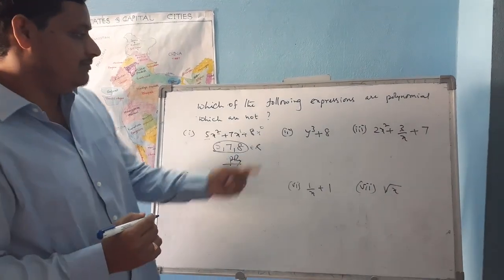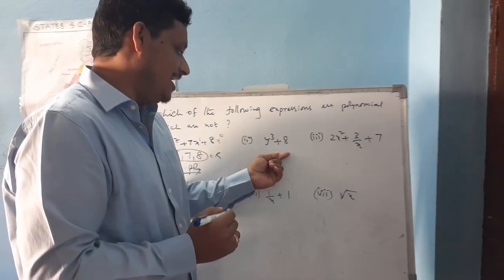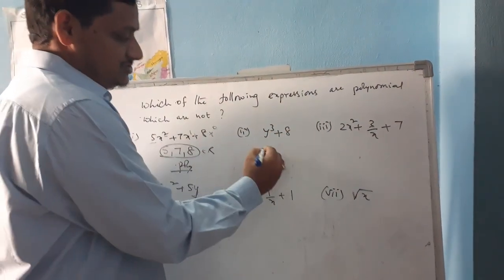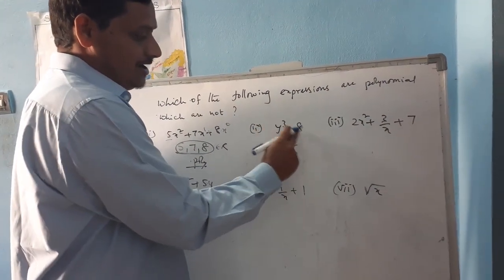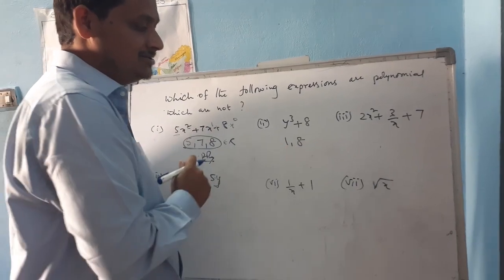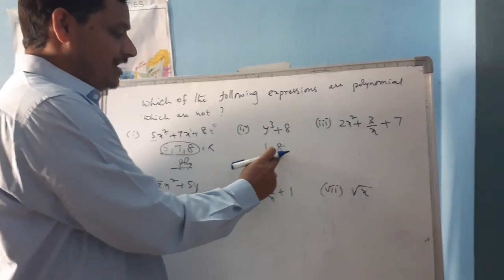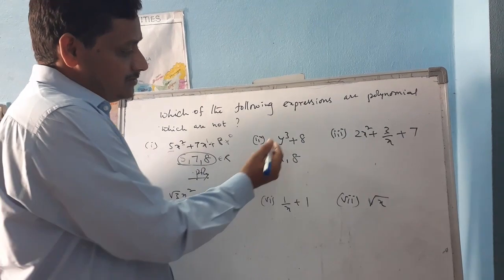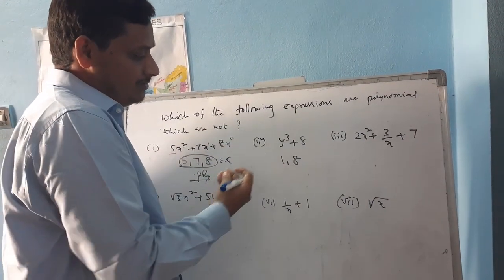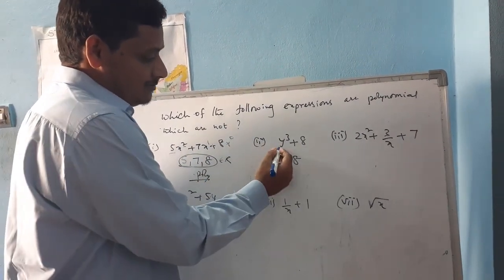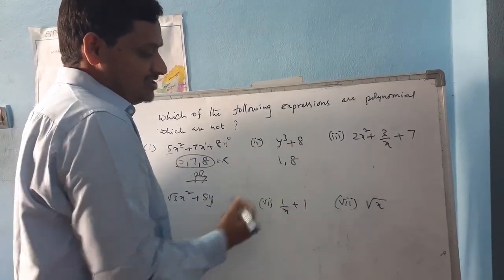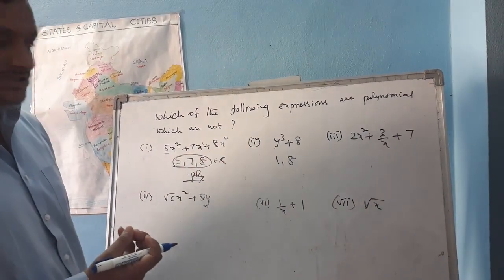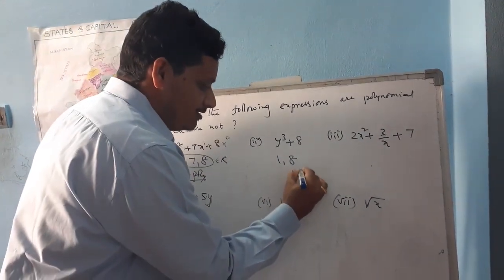For the second expression, y³ + 8: the coefficients are 1 and 8, which are real numbers. The power of the variable is 3, which is a non-negative integer. So this is also a polynomial.